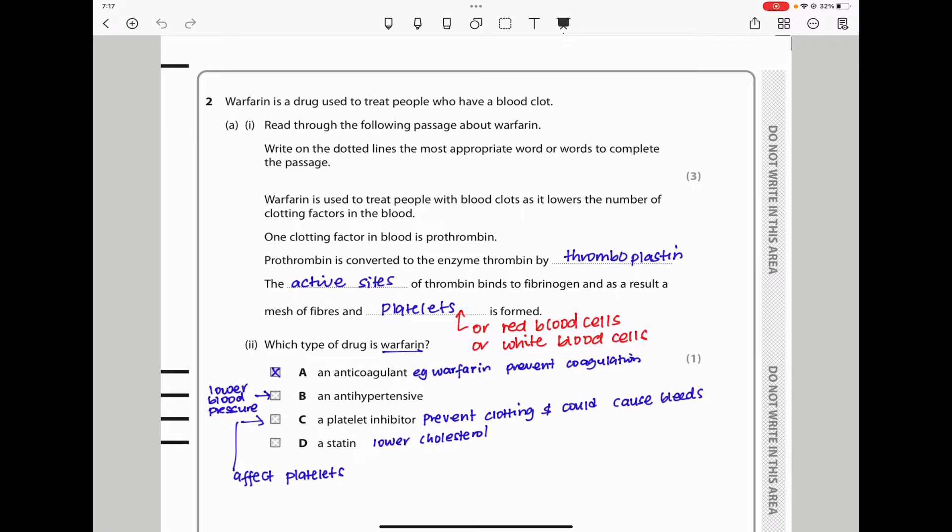Let us continue to question 2. Question 2 says Warfarin is a drug used to treat people who have a blood clot. Read through the following passage about warfarin. Write on the dotted line the most appropriate word or words to complete the passage. This passage is about blood clotting. And we know thromboplastin will catalyze the conversion of prothrombin into thrombin, and then thrombin will be the enzyme to catalyze the conversion of fibrinogen into fibrin.